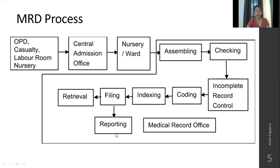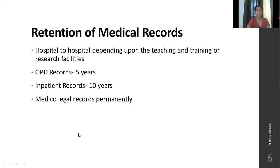Death records, morbidity reports, and disease rates are all sent to the respective law enforcement agencies. These are the functions of the medical records office from assembly through to reporting and retrieval. Regarding retention of medical records: OPD records are usually kept for five years, inpatient records for ten years, and certain medical records should be kept permanently.